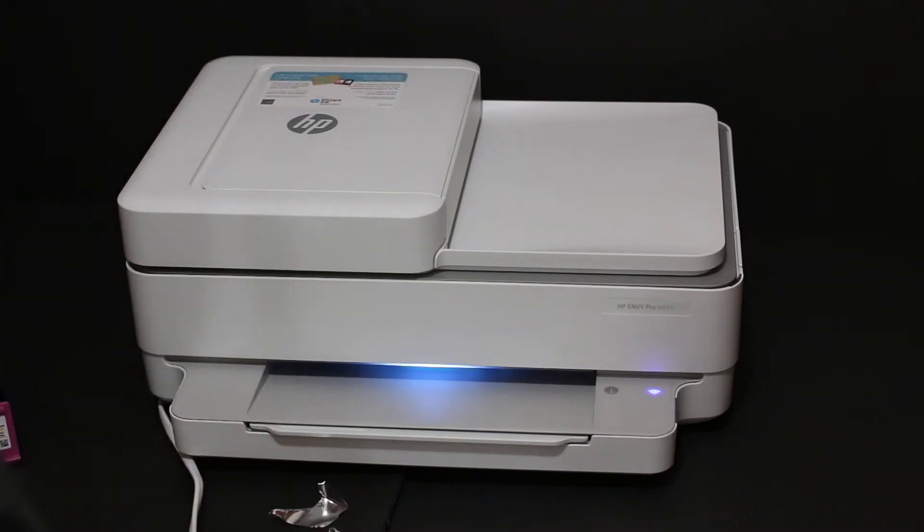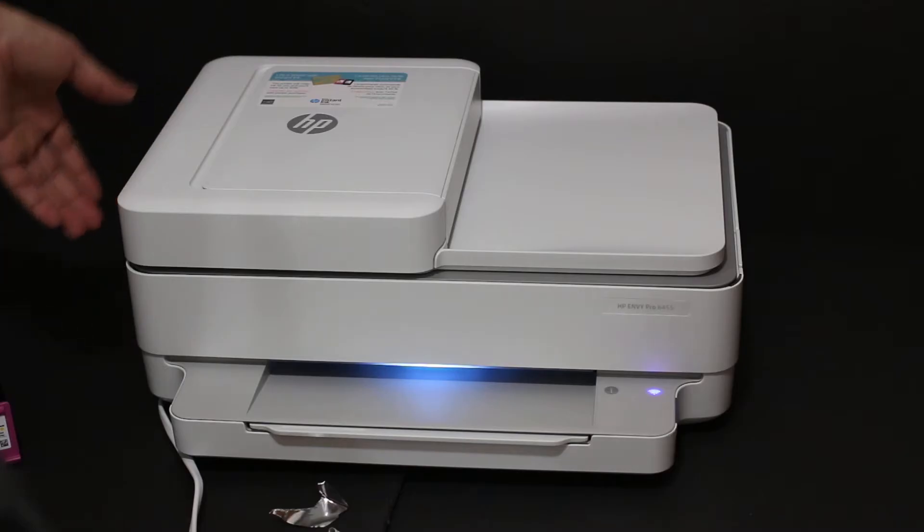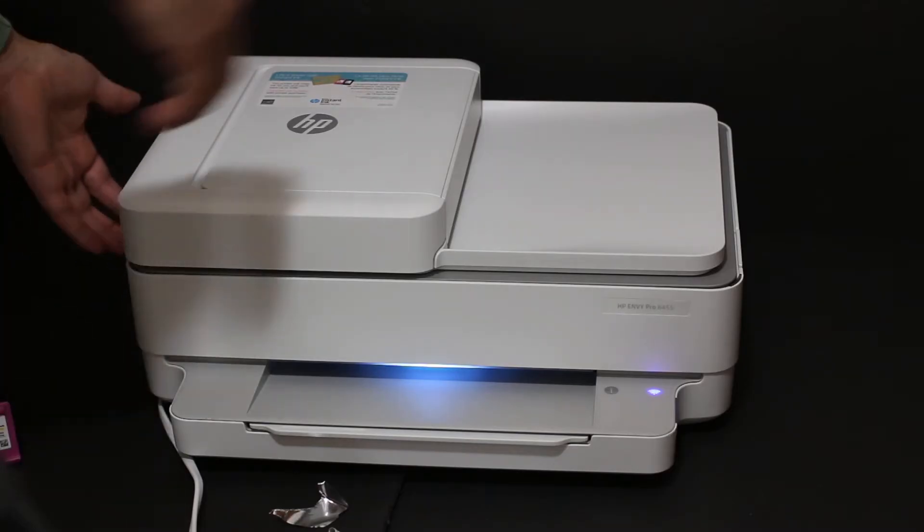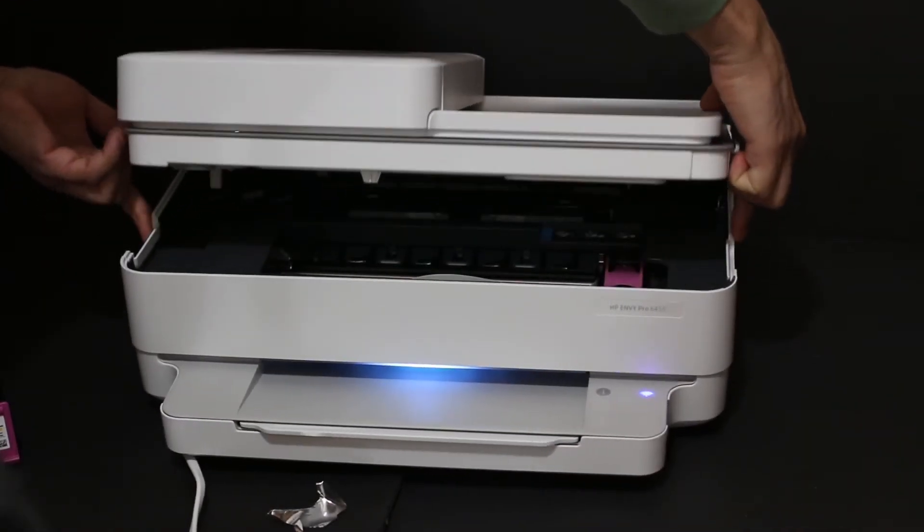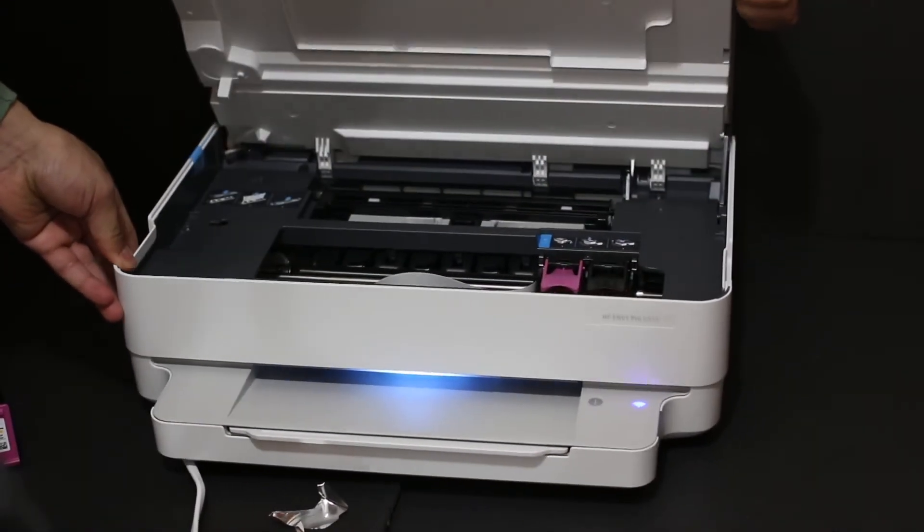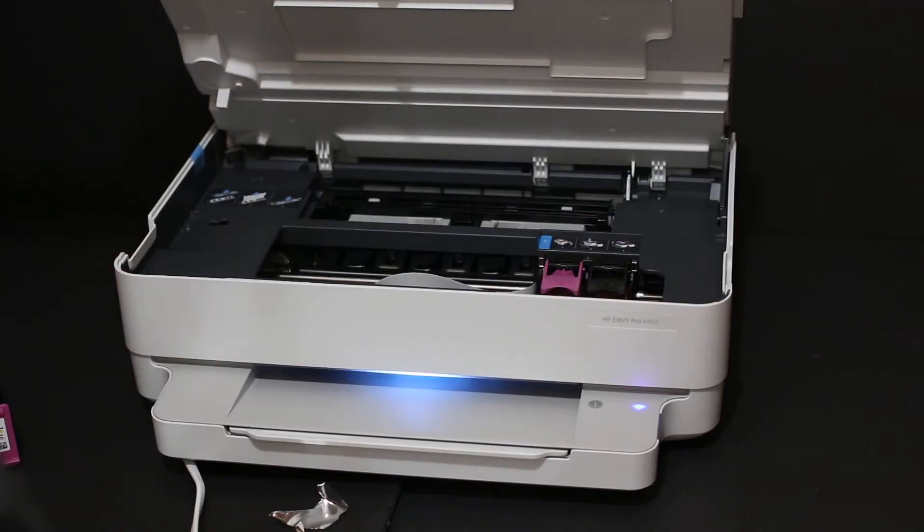To install the ink cartridges, we need to open the printer's ink cartridge chamber. As you can see, there is one hook here and another here. We just have to lift it and hold the printer with the other hand. Now you can leave it, and it will stay on.